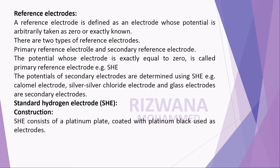There are two types of reference electrodes: primary reference electrode and secondary reference electrode. The electrode whose potential is exactly equal to zero is called a primary reference electrode — for example, the standard hydrogen electrode, also known as SHE. The potentials of secondary electrodes are determined using the standard hydrogen electrode. Examples include the calomel electrode, silver-silver chloride electrode, and glass electrode.